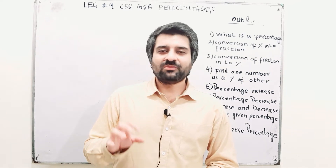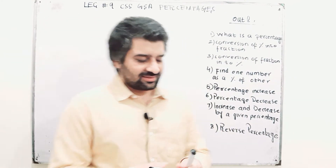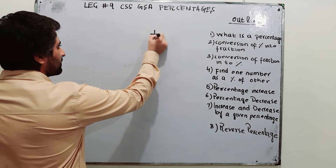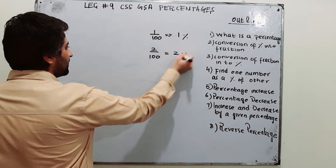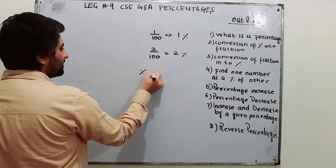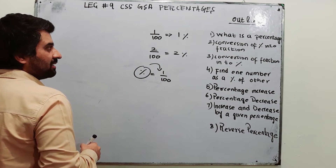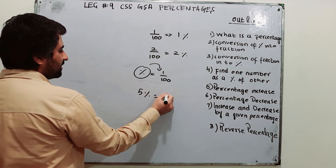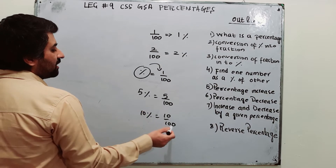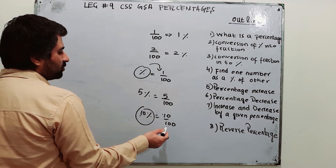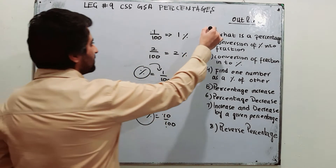The first section is: what is percentage? A percentage is a fraction, but the denominator is 100. For example, 1 over 100 is 1%. The percentage symbol basically means 1 divided by 100. So 5% means 5 divided by 100, 10% means 10 divided by 100. In short, 10 percent means 10 parts out of 100, 5 percent means 5 parts out of 100, 1 percent means 1 part out of 100.